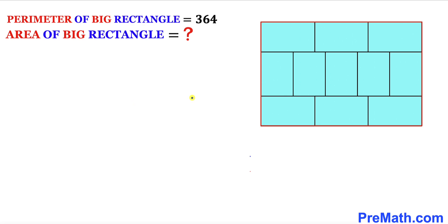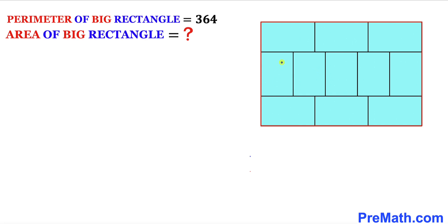Let's get started. We know that all these tiny rectangles are identical, so they all have the same dimensions. Let's assume that the length of all these tiny rectangles is x. Each of these lengths shown in the diagram is x.